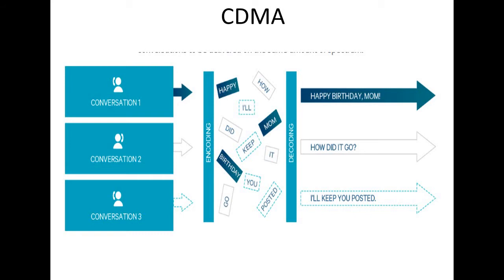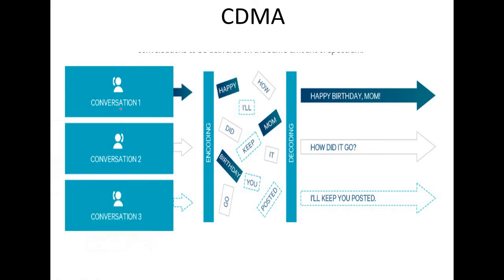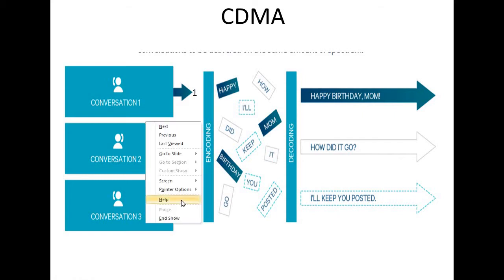Consider this simple figure to understand Code Division Multiple Access (CDMA). There are three persons shown in the figure: person 1, person 2, and person 3. Person 1 has code 1, person 2 has code 2, and person 3 has code 3.